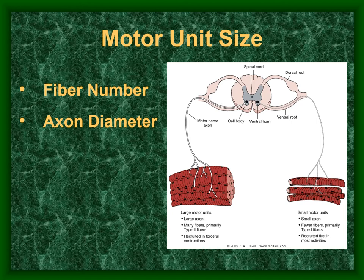Large alpha motor neurons with large cell bodies have large-diameter axons going to big motor units with many fibers — the larger, more powerful type fibers that generate lots of tension. Small alpha motor neurons have smaller-diameter axons going to smaller motor units with fewer fibers that generate less tension.